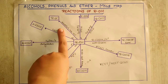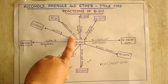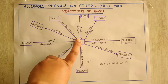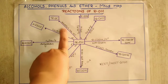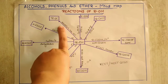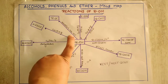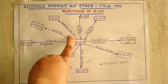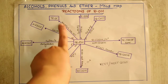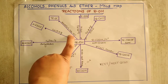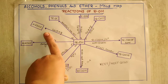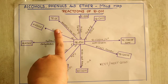When alcohol is treated with a mixture of zinc chloride and concentrated HCl, we will get an alkyl halide. This reagent is known as Lucas reagent. This reagent or test is used to distinguish between primary, secondary, and tertiary alcohols. The product obtained is an alkyl halide.